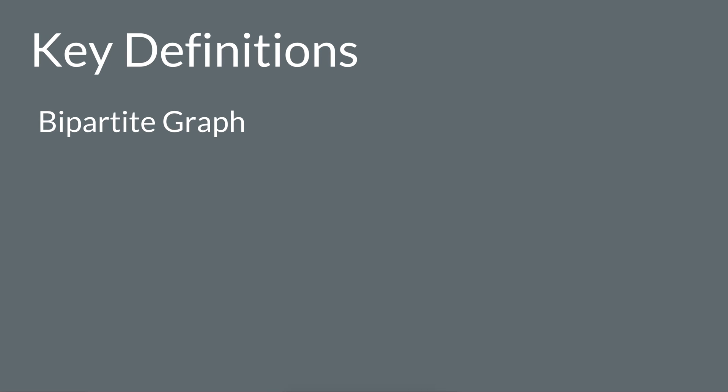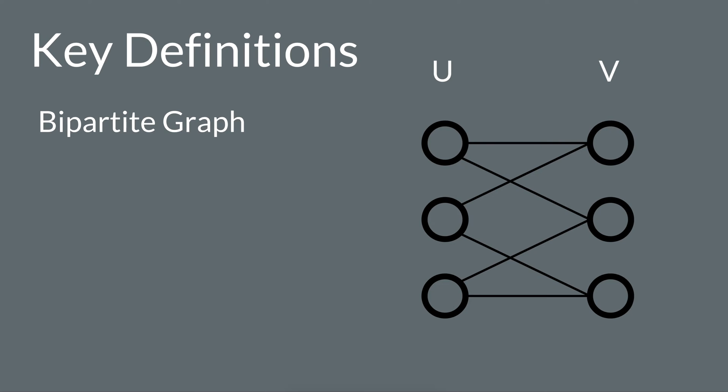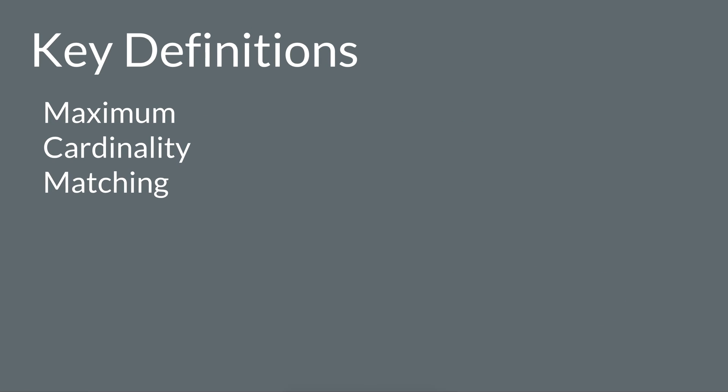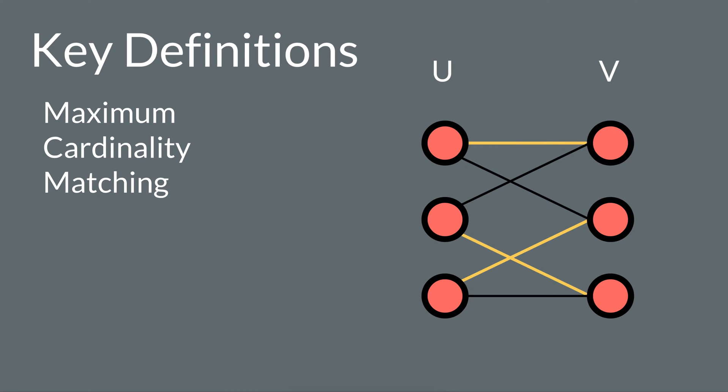A bipartite graph is a graph whose vertices can be divided into two disjoint sets, U and V. A maximum cardinality matching is the set of as many edges as possible that don't share endpoints.